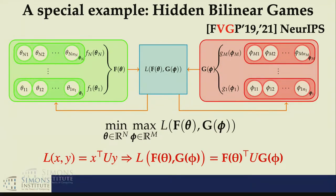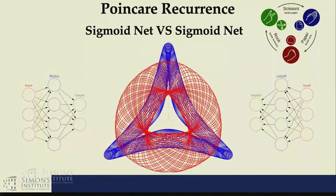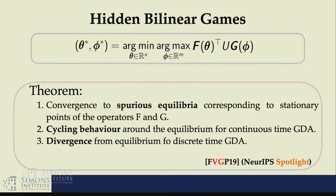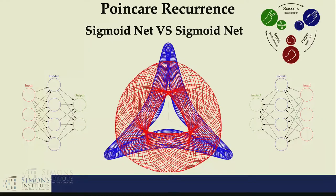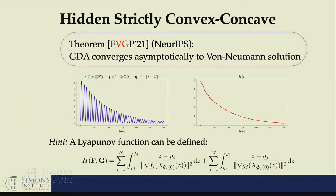The first thing we analyzed was the hidden bilinear game, where instead of having x transpose U y, you have that thing. What we proved is that either you will have cycling phenomena - it's very impressive we can prove this, what we call Poincare recurrence - or you will have some spurious equilibria and some very specific divergent phenomena.